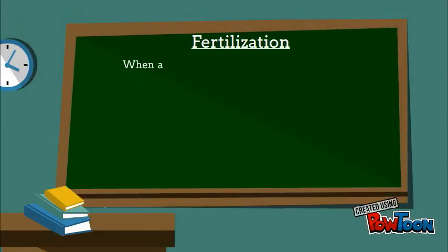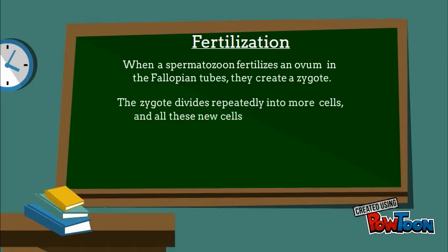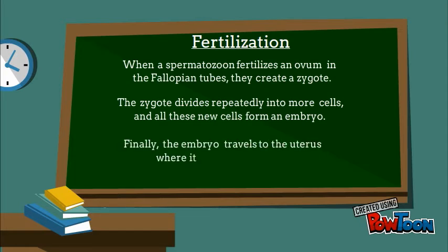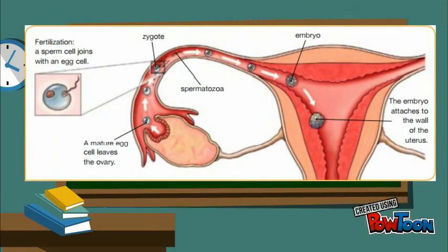Fertilization. When a spermatozoon fertilizes an ovum in the fallopian tubes, they create a zygote. The zygote divides repeatedly into more cells, and all these new cells form an embryo. Finally, the embryo travels to the uterus, where it continues to grow. Here you can see the process of fertilization, where the zygote is created, where it goes after that, and when it becomes an embryo.